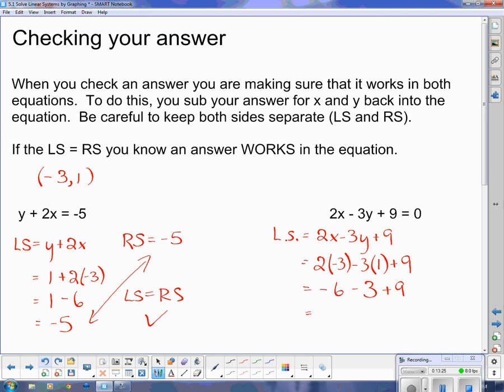And while negative 6 minus 3 is negative 9 plus 9, makes this side 0, which is great because that's what was on my left side. Oh, sorry, my right side. My right side is 0 as well. So my left side equals the right side, which means that this works in both equations.